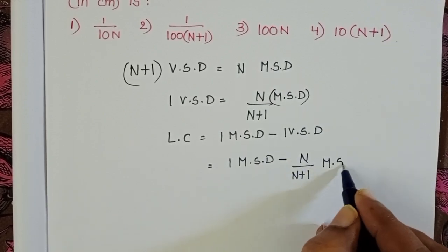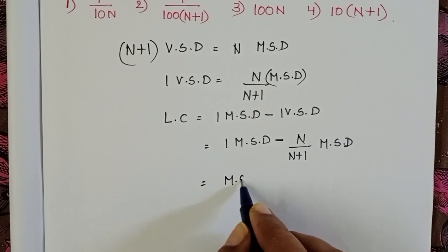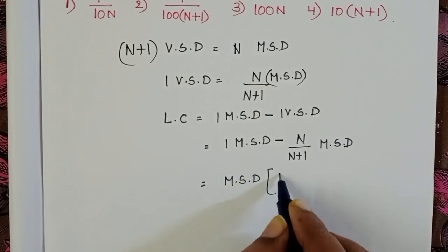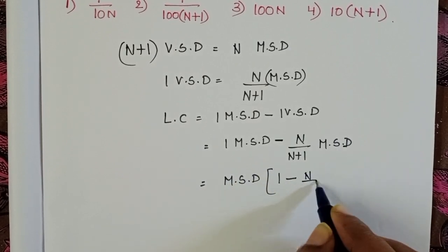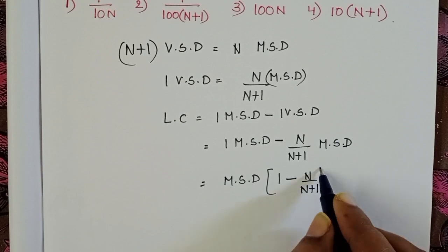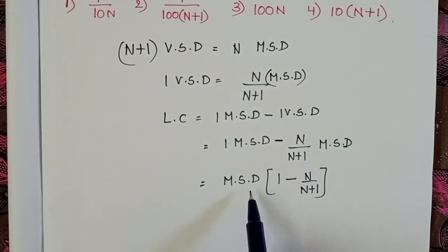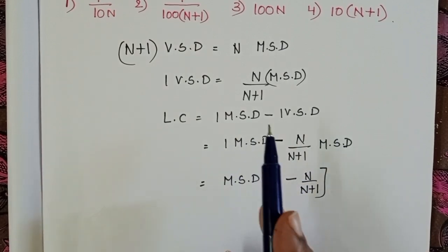Main scale divisions. Main scale division into 1 minus n by (n+1). Given, 1 main scale division equals 0.1 mm.